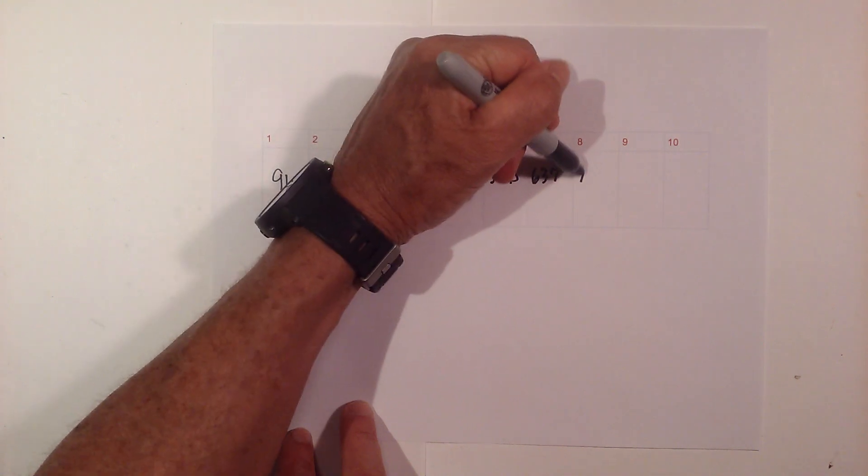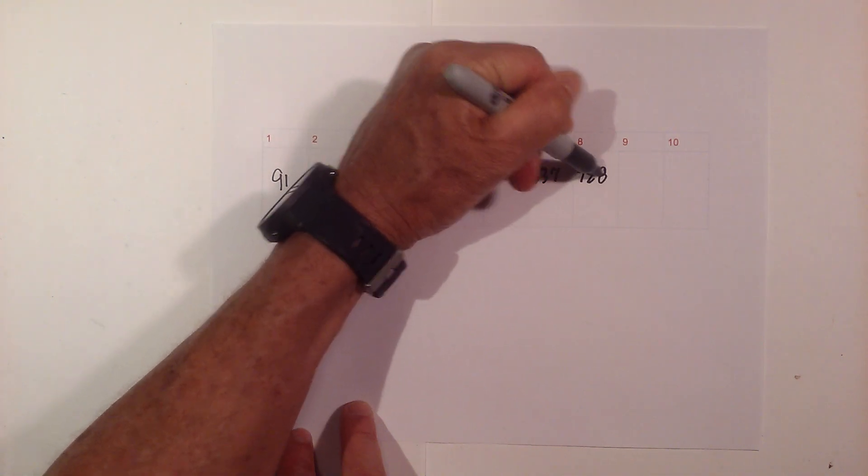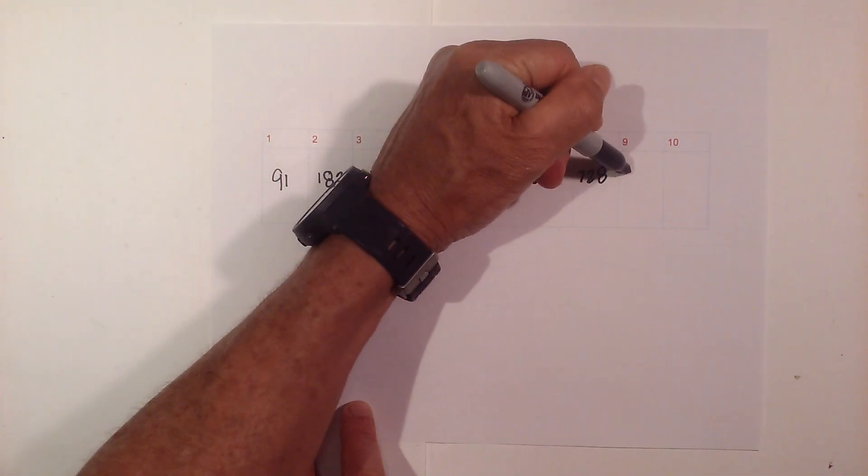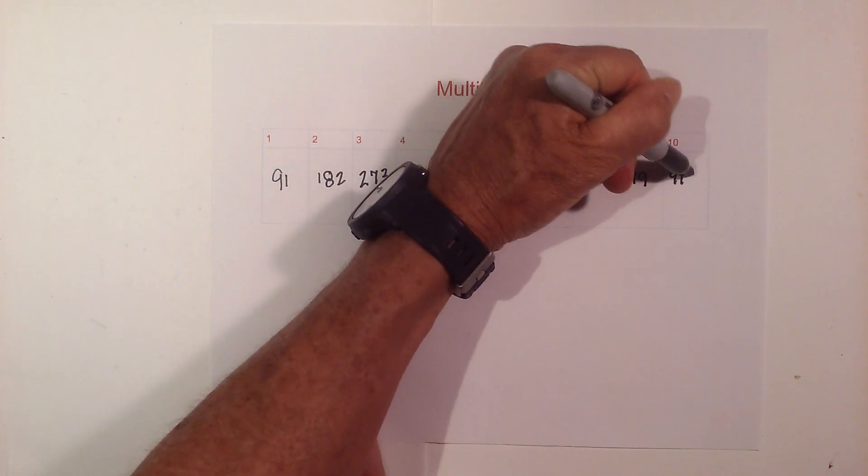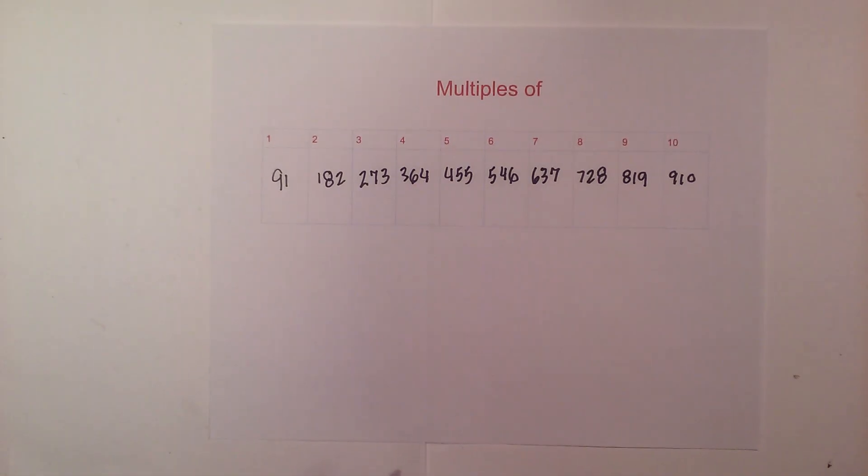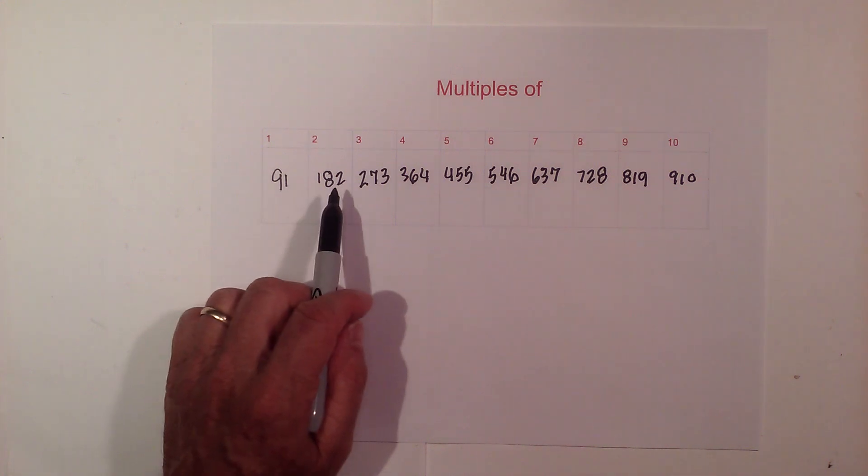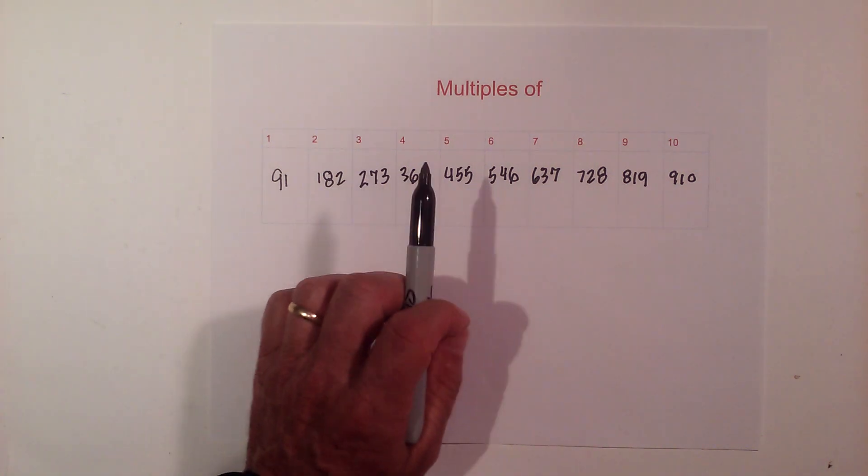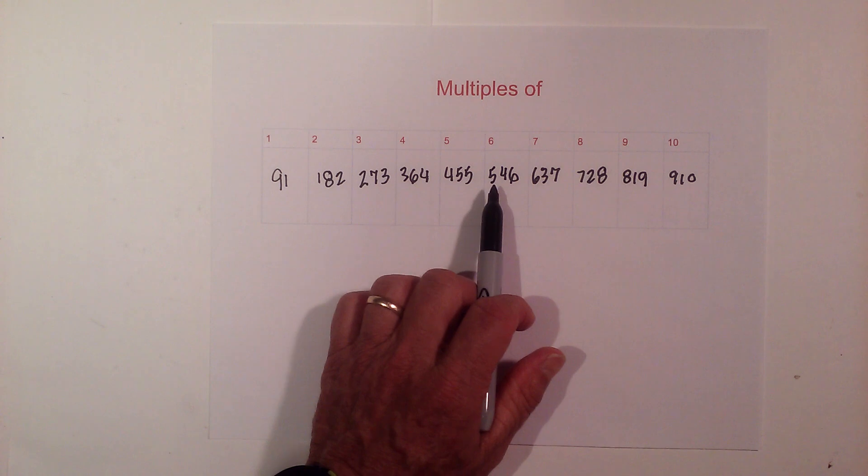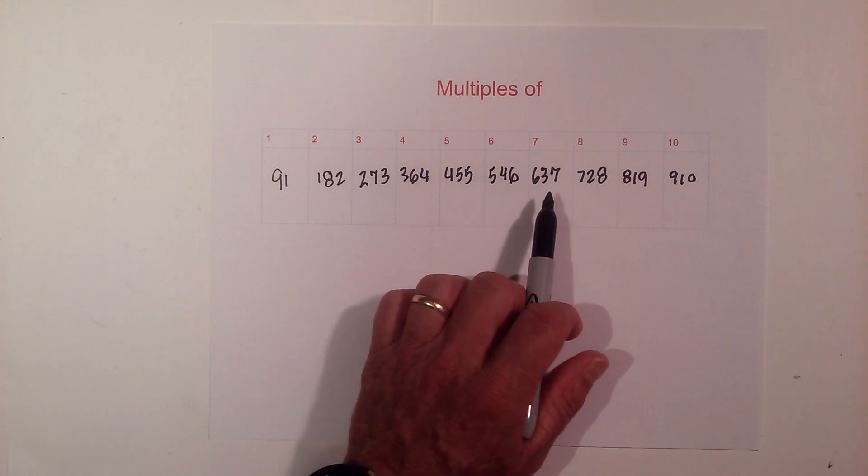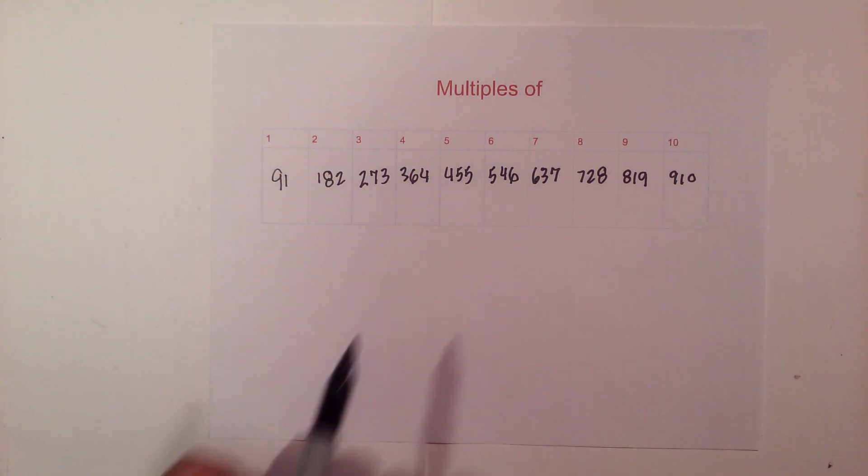So the multiples of 91 are 91, 182, 273, 364, 455, 546, 637, 728, 819, and 910. Thanks for watching, and Moo Moo Math uploads a new math and science video every day. Please subscribe and share.